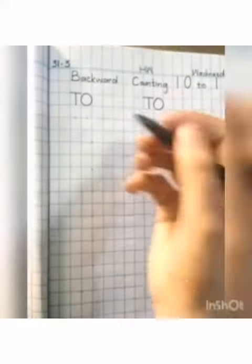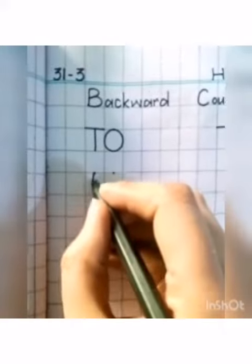Now I will tell you how to write backward counting. You have to write backward counting 10 to 1. Now you have to see where backward counting will start from - you will start from 10.